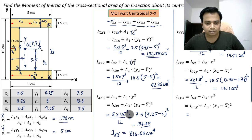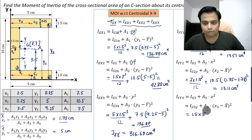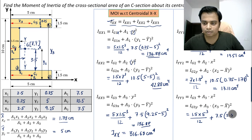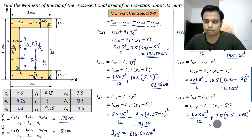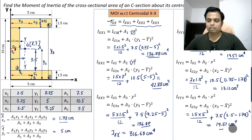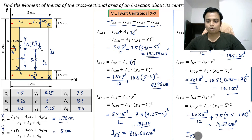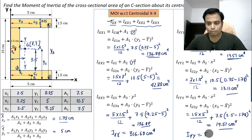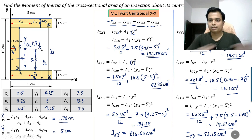For rectangle 3 about Y-Y: (1.5 × 5³)/12 + 7.5 × (x3 − x̄)². With x3 = 2.5 and x̄ = 1.78, we get (2.5 − 1.78)². The final value is Iyy3 = 19.51 cm⁴. Summing all three, the total moment of inertia of the C-section with respect to centroidal Y-Y is 52.13 cm⁴.